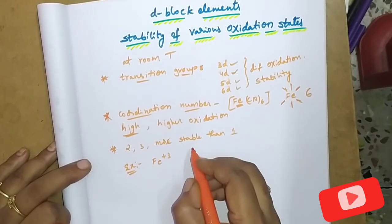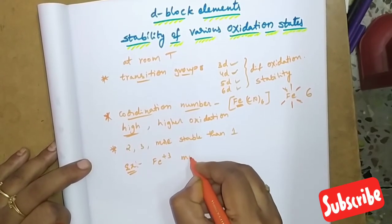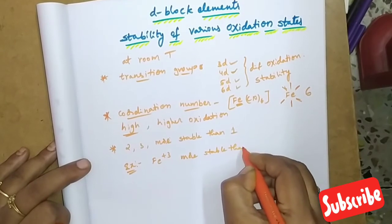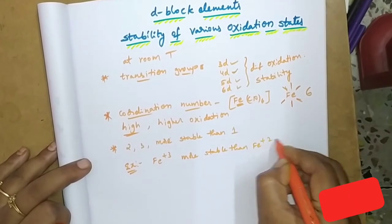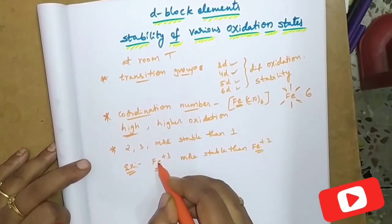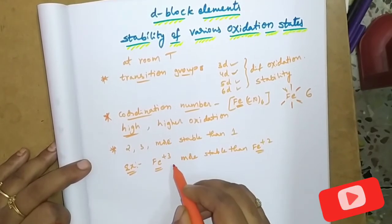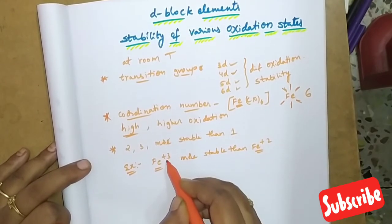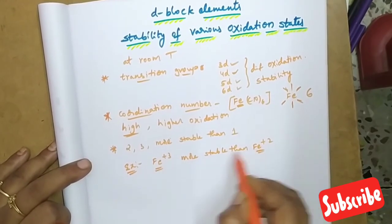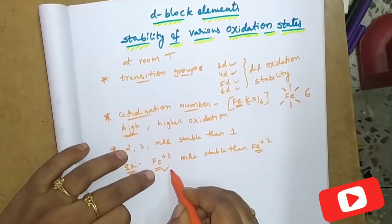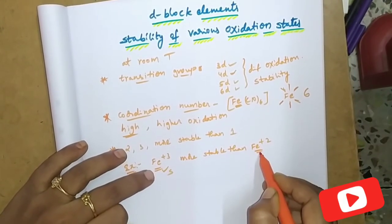As oxidation state increases, stability nature also increases. In this comparison, plus 3 state is here and plus 2 state is here. Which one has higher oxidation state? This one. So this one has more stability nature compared to the other.